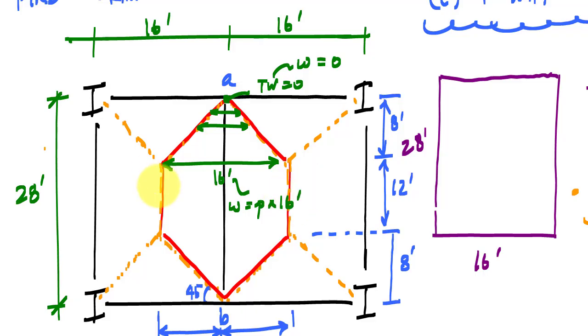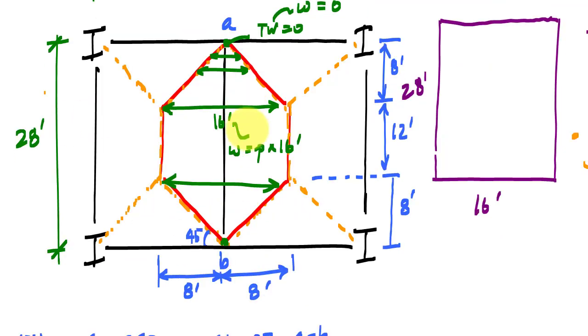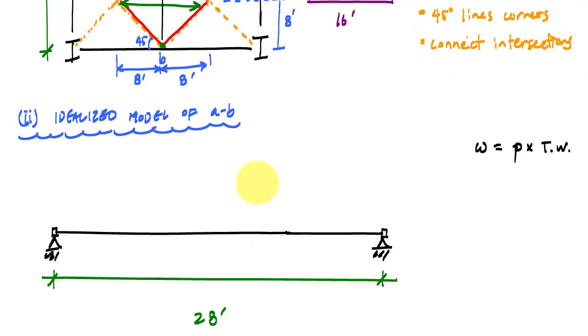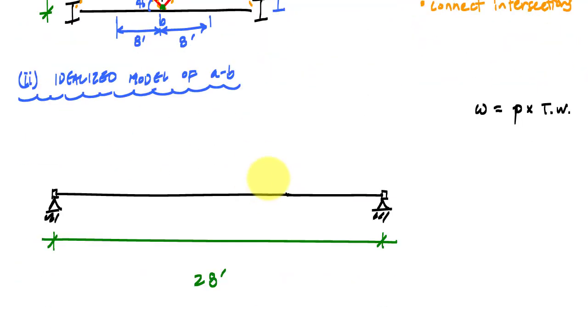And at this point, my distributed load will be the pressure times 16 feet, and then it's uniform for 12 feet along the length of the beam, and then again has a linear variation from B, which is again right here, a zero tributary width, all the way to this location. That means my distributed loading varies linearly.